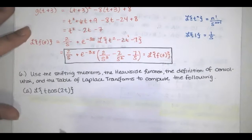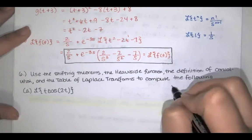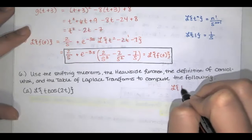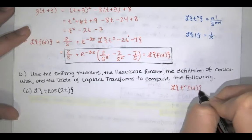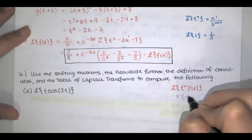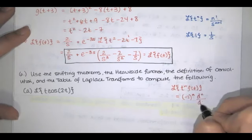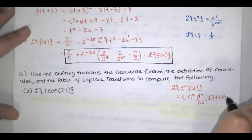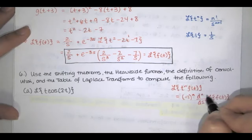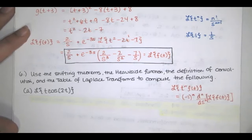We have a theorem that allows us to take the Laplace transform of something that looks like t to the n times f of t. That theorem says: the Laplace transform of t to the n times f of t equals negative 1 to the n times the nth derivative with respect to s of the Laplace transform of f of t. So you compute that Laplace transform, take its nth derivative, then multiply by negative 1 to the n.